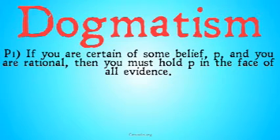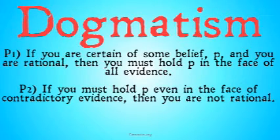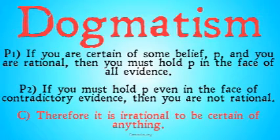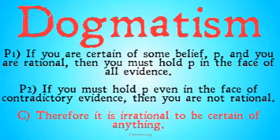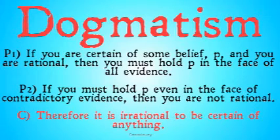The New Paradox of Dogmatism is formulated as follows. If you're certain of some belief P and you are rational, then you must hold P in the face of all evidence. If you hold P in the face of contradictory evidence, then you're not rational — that's premise two. Therefore, it is irrational to be certain of anything. This shows a conflict between our inductive definition of rationality in premise one and our deductive definition of probability in premise two.